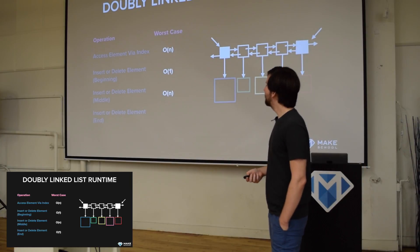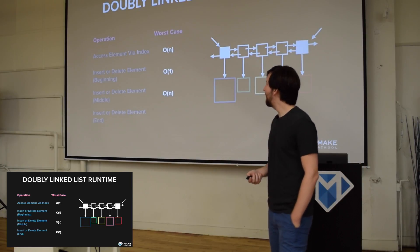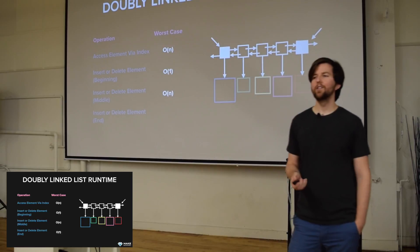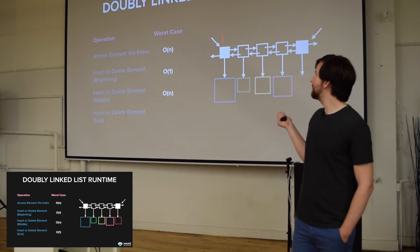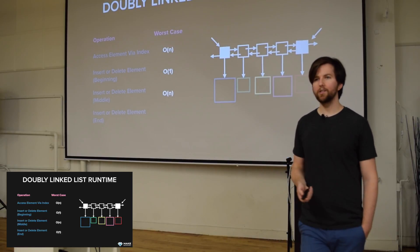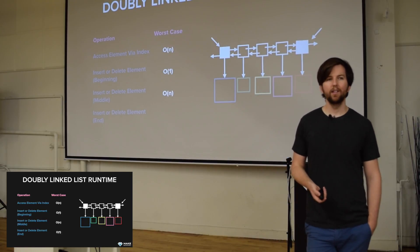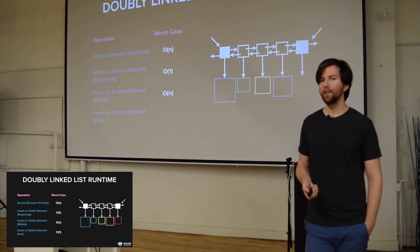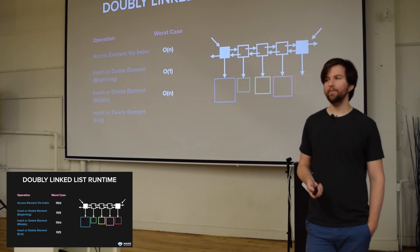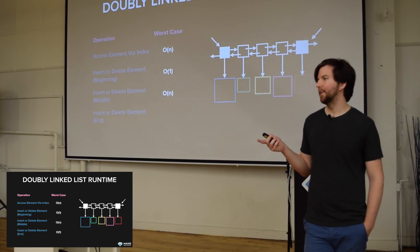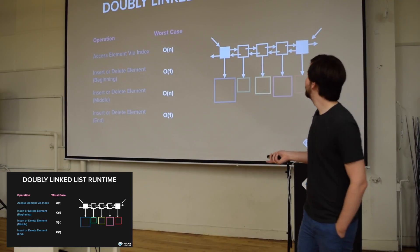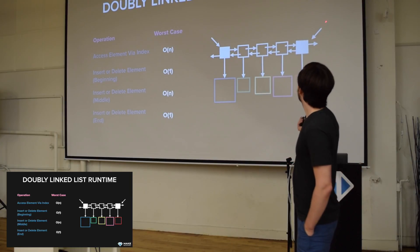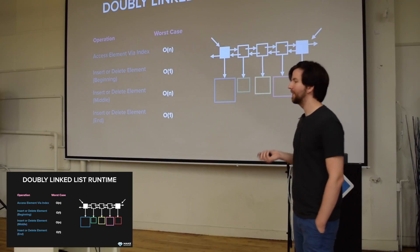Inserting or deleting at the end of a doubly linked list is O(1), because we have a tail pointer to the end — so we can access the last element directly and get constant time access.